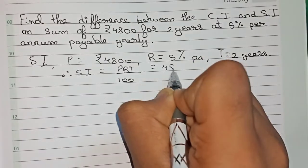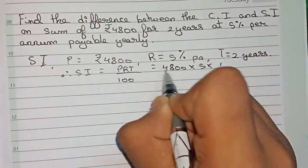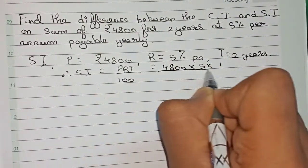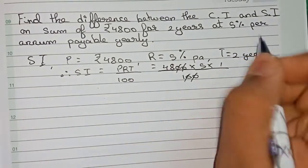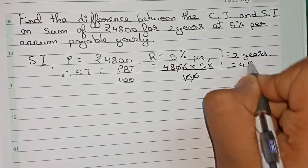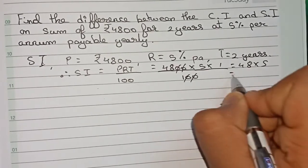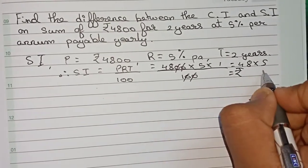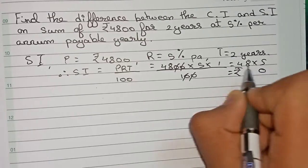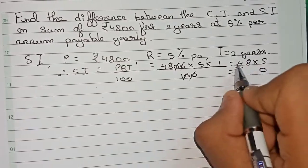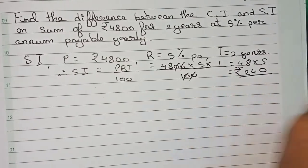It becomes four thousand eight hundred into five into two by hundred. Cutting the zeros, it remains forty-eight into five, which equals rupees two hundred forty.